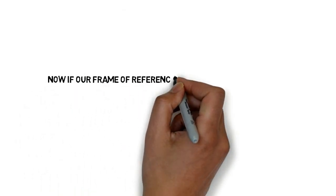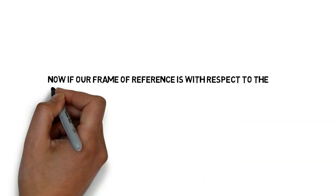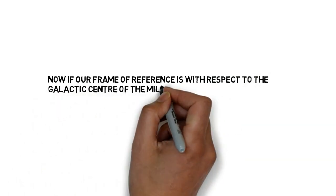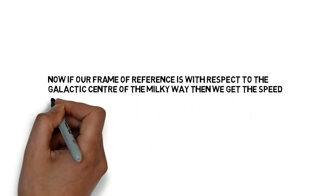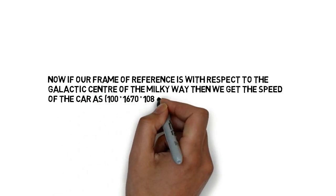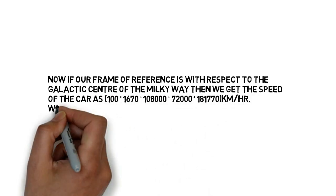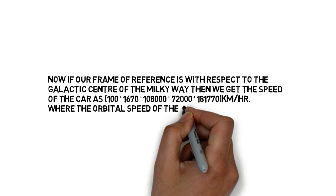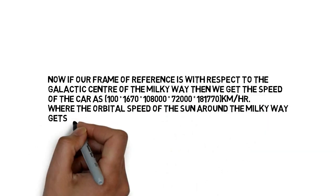Now if our frame of reference is with respect to the galactic center of the Milky Way, then we get that the speed of the car is about 181,770 kilometer per hour, where the orbital speed of the sun around the Milky Way gets added.